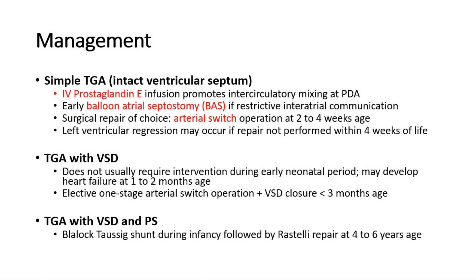If there is transposition of great arteries with ventricular septal defect and pulmonary stenosis, a Blalock-Taussig (BT) shunt can be done during infancy, followed by a Rastelli repair when the child is 4–6 years old. These are the types of surgeries available for transposition of great arteries.